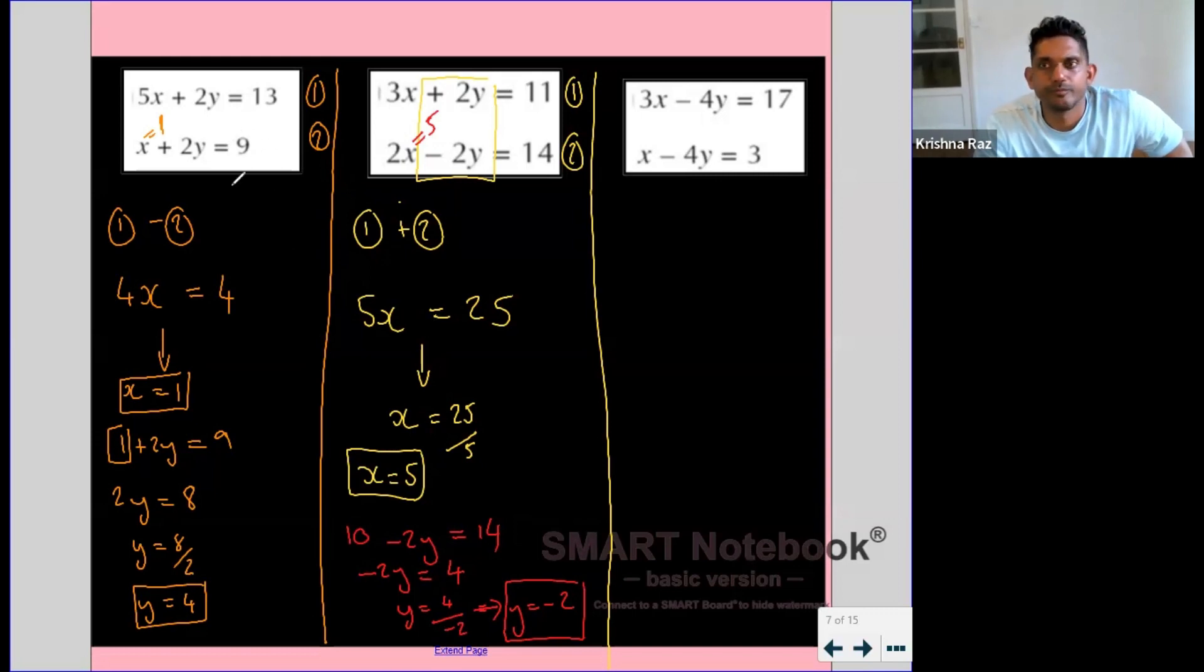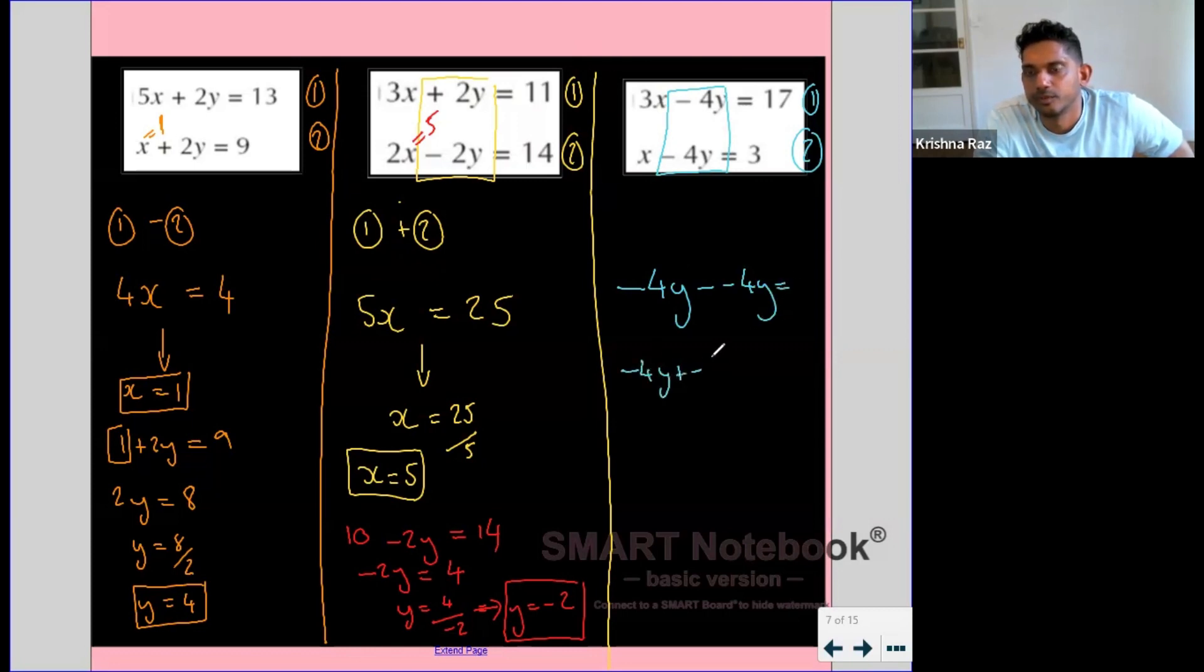So now on the last one, we know that we're either going to have to add or subtract the equations. Let's have a look at this first. If we subtract them, we would get that, and if we added them, we would get that.